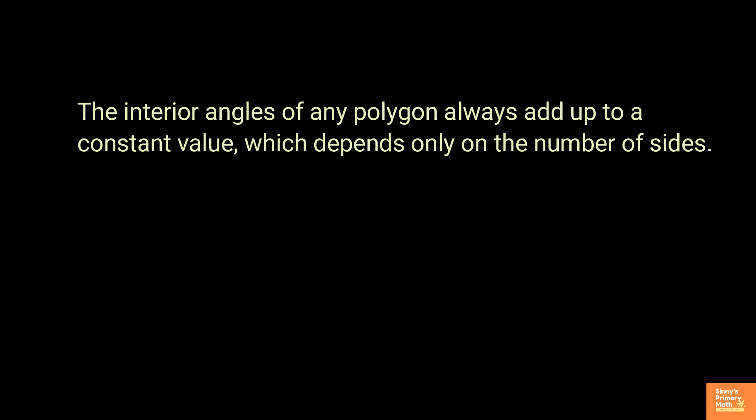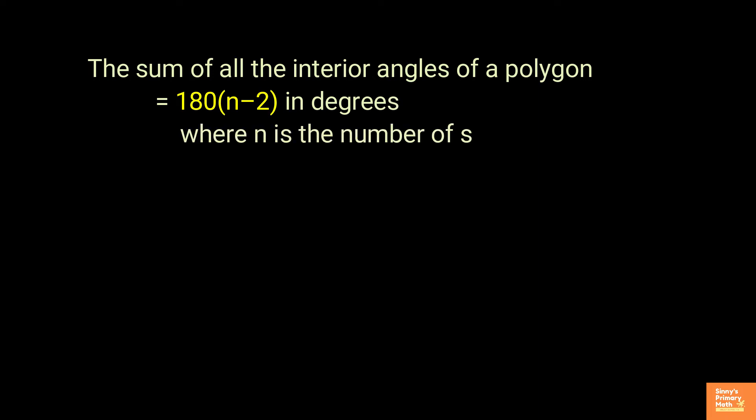The sum of all the interior angles of a polygon is given by the formula 180 into N minus 2 in degrees, where N is the number of sides.